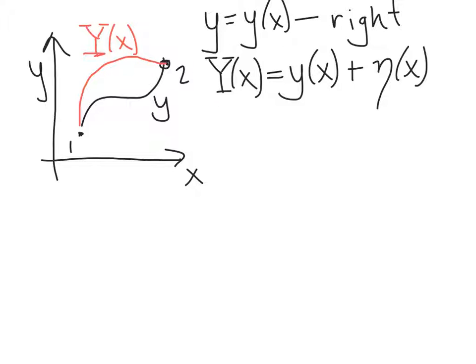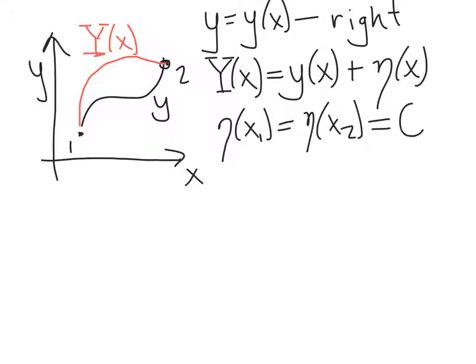We have some conditions on this function η — it's not entirely arbitrary. We require that η at x₁ is equal to η at x₂, and that these are both equal to 0. In other words, the perturbed path capital Y of x starts at point 1 and ends at point 2, just like the right path y of x, but in between it does other funny things.